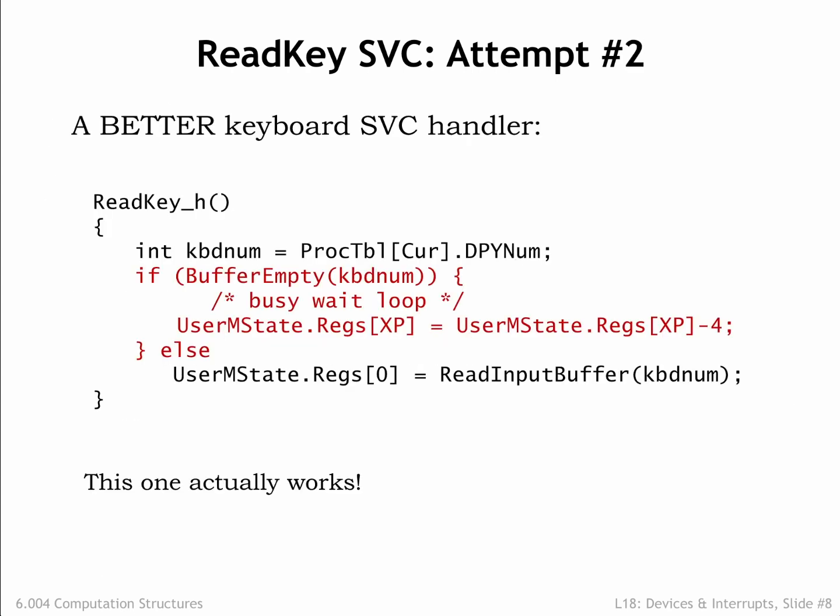Time to reach for the power switch! We'll fix the looping problem by adding code to subtract 4 from the saved value of the XP register before returning. Recall that when the SVC illegal instruction exception happened, the CPU stored the PC++ value of the illegal instruction in the user's XP register. When the handler exits, the OS will resume execution of the user-mode program by reloading the registers and then executing a jump XP, which would normally execute the instruction following the SVC instruction. By subtracting 4 from the saved XP value, it will be the SVC itself that gets re-executed, repeating the cycle until the keyboard buffer is no longer empty.